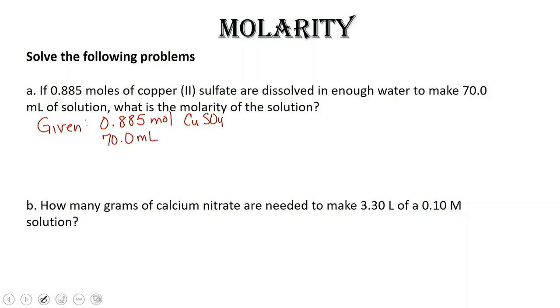We're also given that the total volume of our solution is 70 milliliters. Remember, molarity is moles per liter. So let's convert this volume into liters: 0.0700 liters. Don't forget those zeros on the end because there's a decimal place here and those zeros are significant. What do we need? We need molarity. Well, this problem is pretty simple because we have the moles and we have the liters. So that's just 0.885 divided by 0.0700 liters, which gives us 12.64. With three sig figs, it's 12.6 molar.